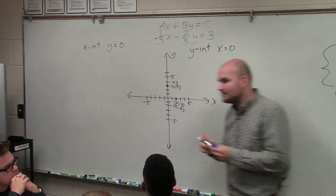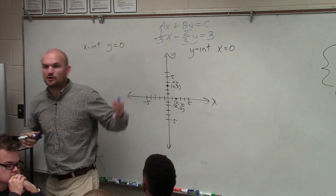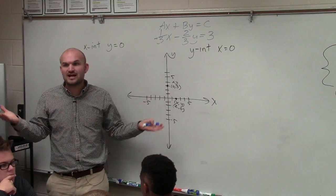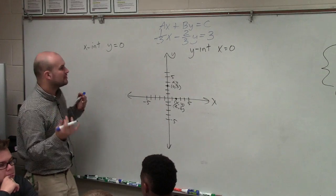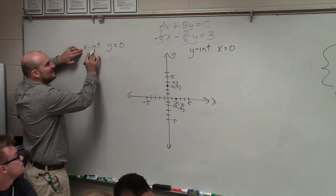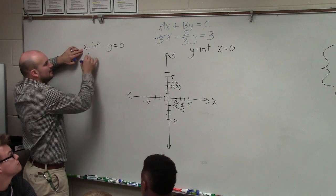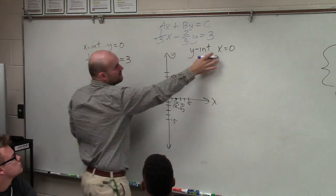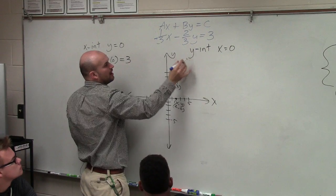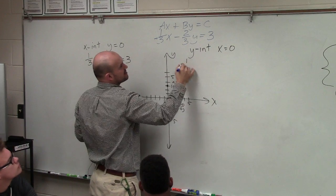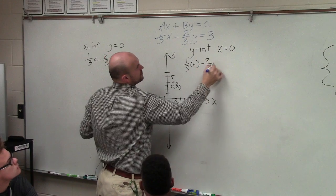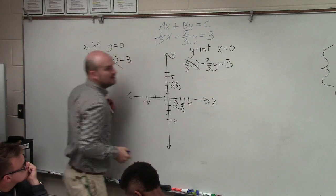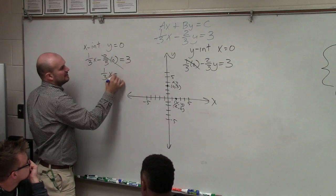So rather than having to rewrite it in slope-intercept form, which I know some students still have problems with, and even if you do put it in slope-intercept form, you might have a fraction as a y-intercept, which is not fun to graph. So there is another way. The other way is to find the x-intercept by plugging 0 in for y. So I say one-third x minus two-thirds times 0 equals 3. Then find the y-intercept by putting 0 in for x: one-third times 0 minus two-thirds y equals 3. What's nice about this, anytime you multiply by 0, you have 0. So I'm left with one-third x equals 3.